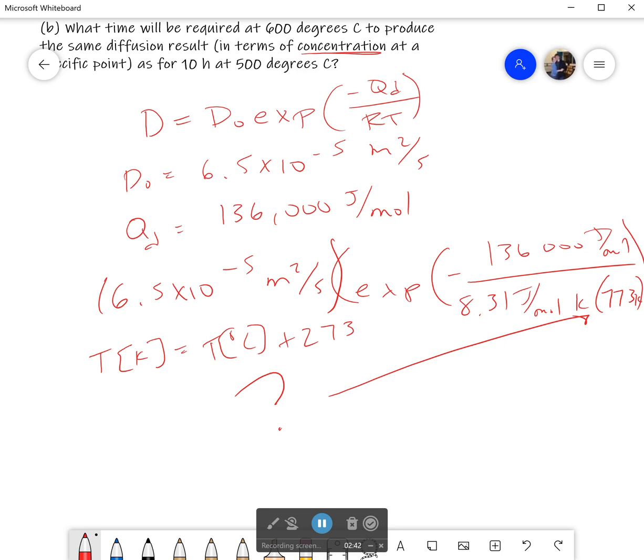Now if I do all that correctly and I plug in my calculator, fingers crossed there, I would get 4.15 times 10 to negative 14 meters squared per second. So that solves my first part of my problem.